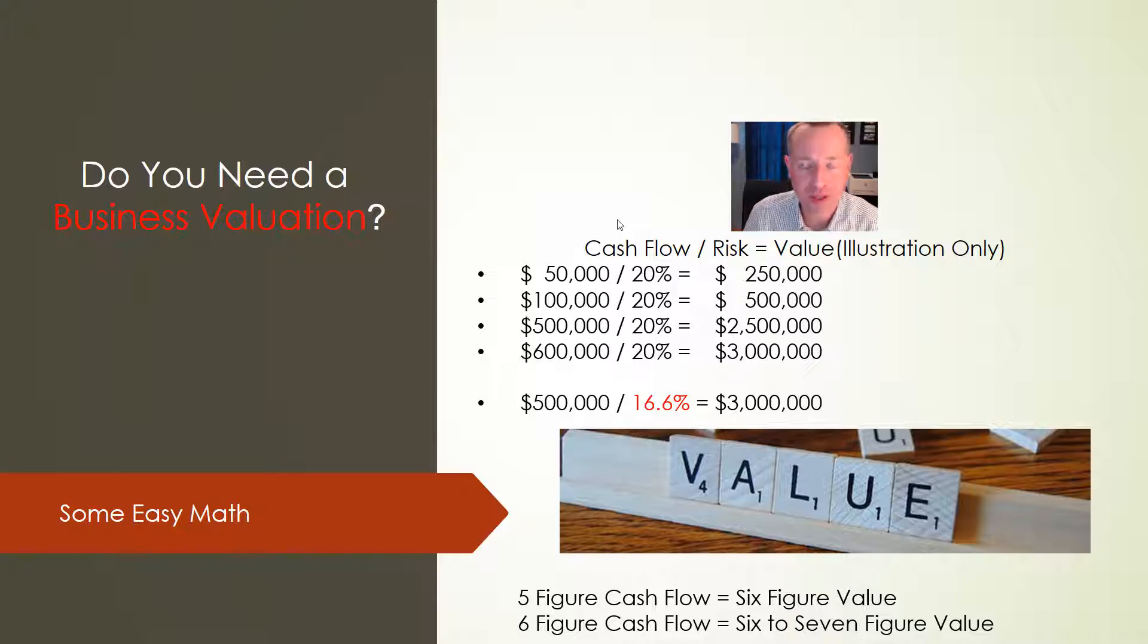Let's say it's a half million dollars of cash flows and we drop the risk rate instead - we have a $3 million business. So you can see that a five-figure cash flow can be a six-figure valued business. In this illustration, a six-figure cash flow can be a six to seven figure value business. So the stakes are huge here - absolutely just unbelievable.